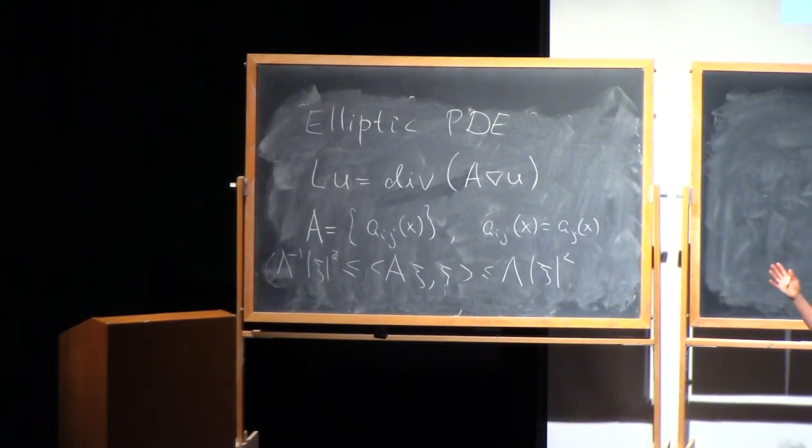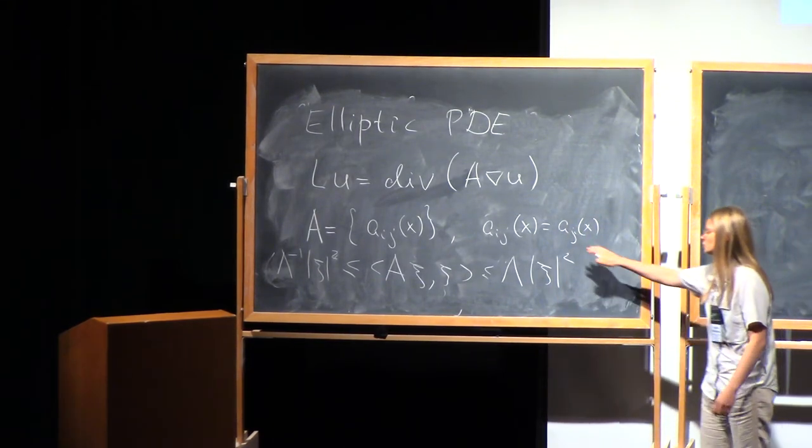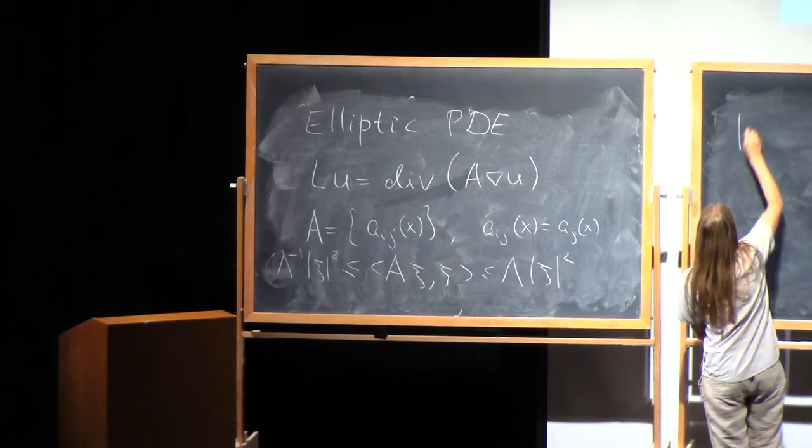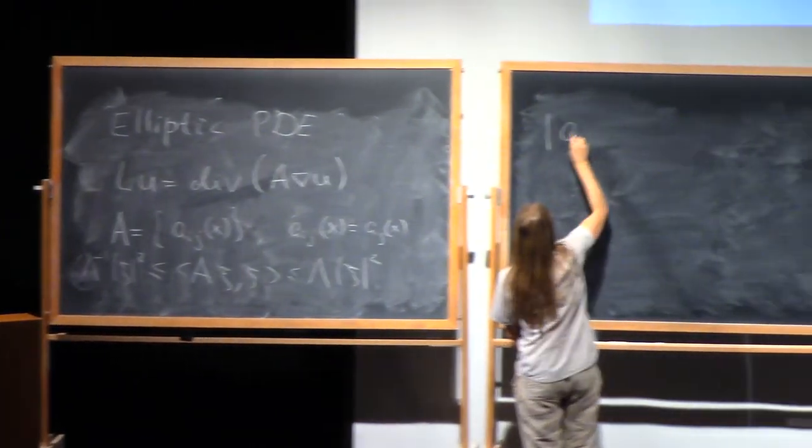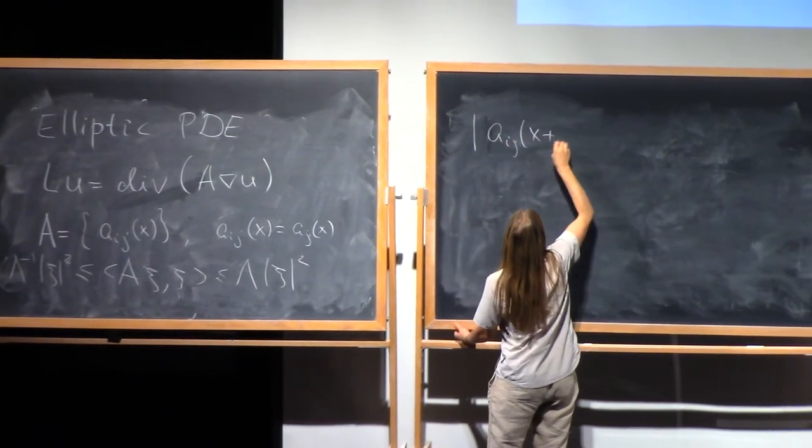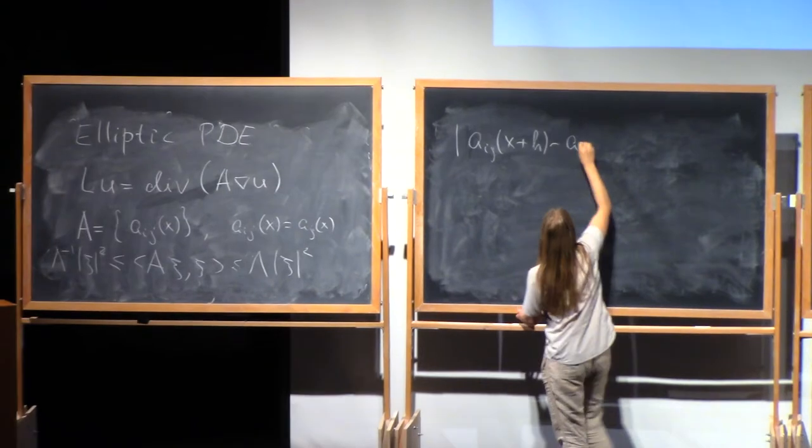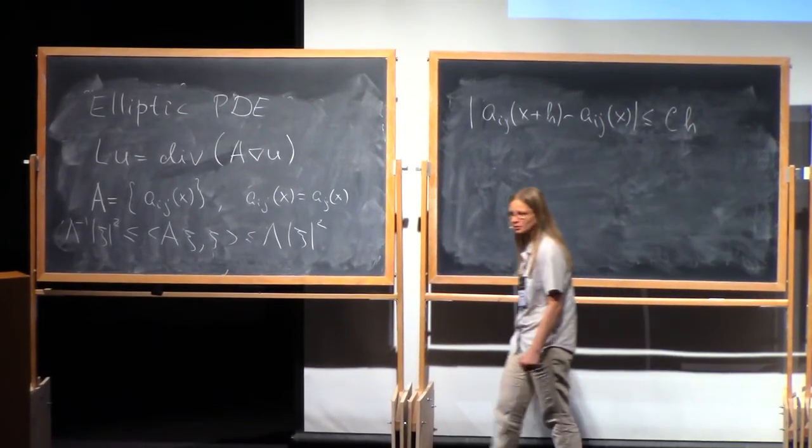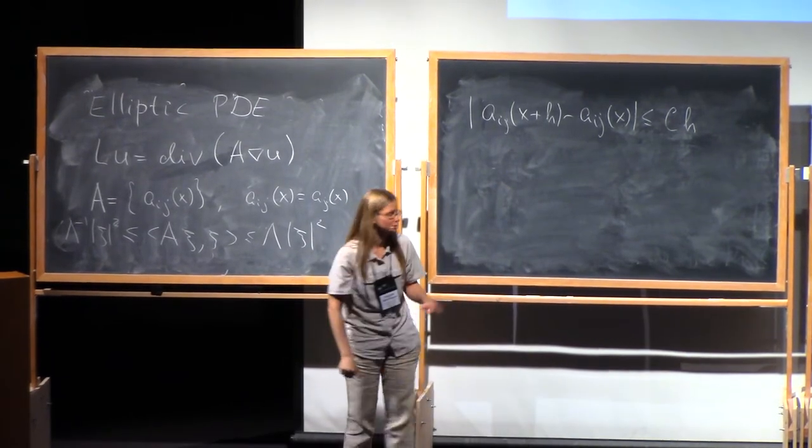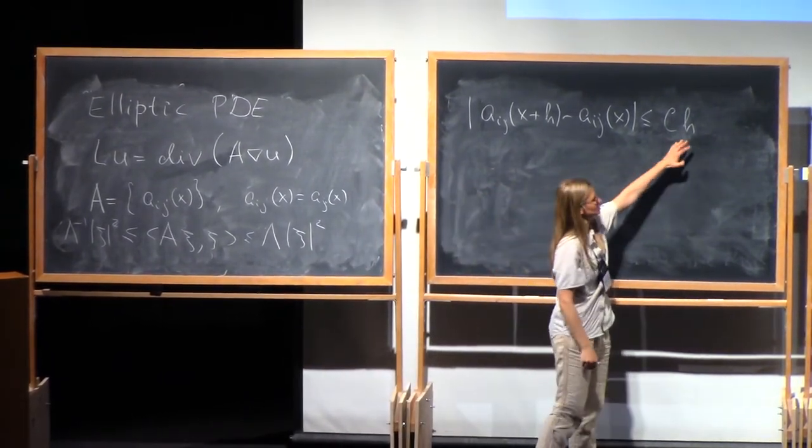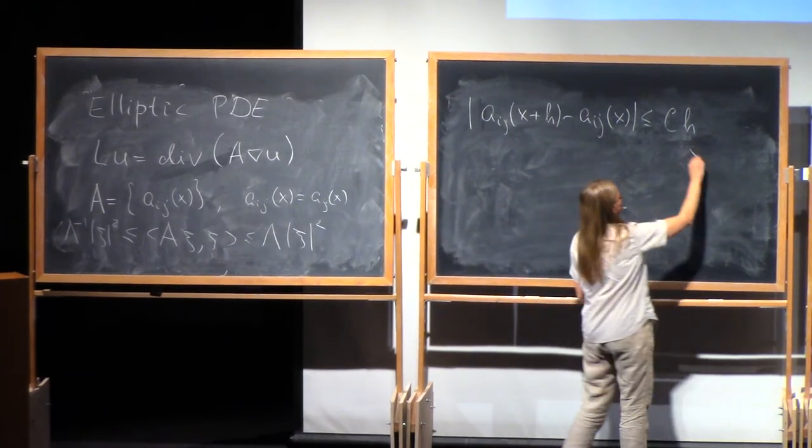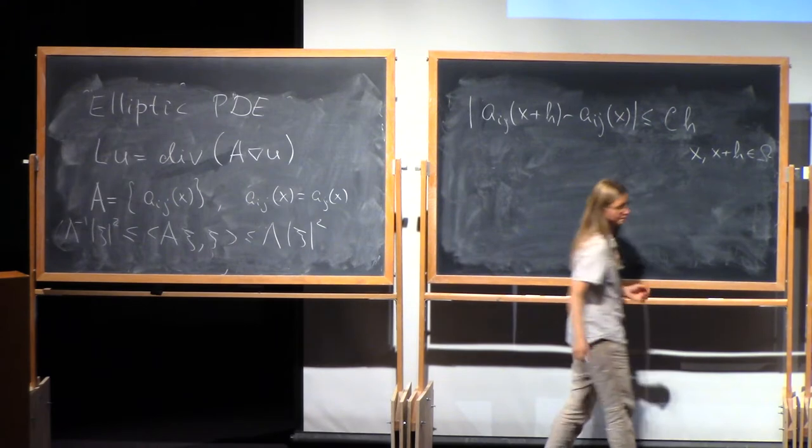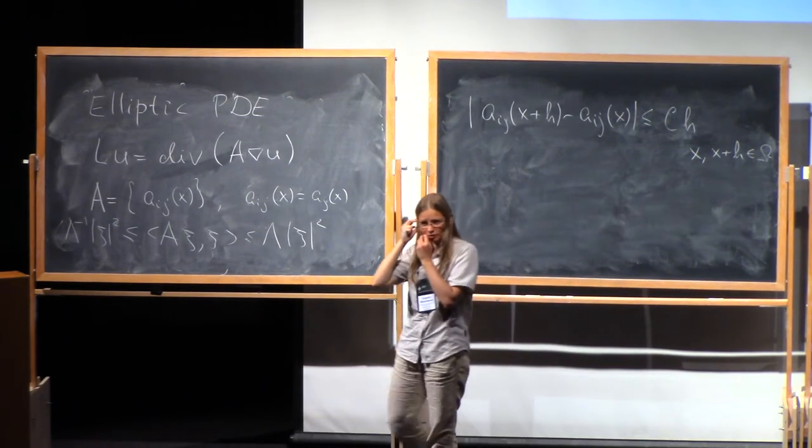We will most of the time assume that our coefficients are good enough, Lipschitz, so we have a uniform constant C, such that this is true for all. And this is the regularity that we will assume.